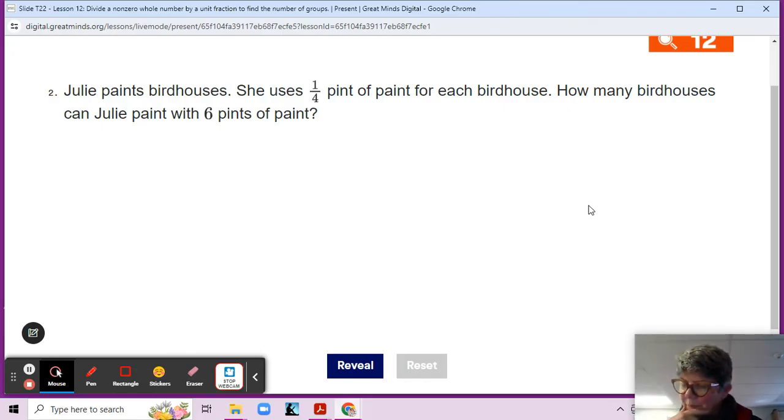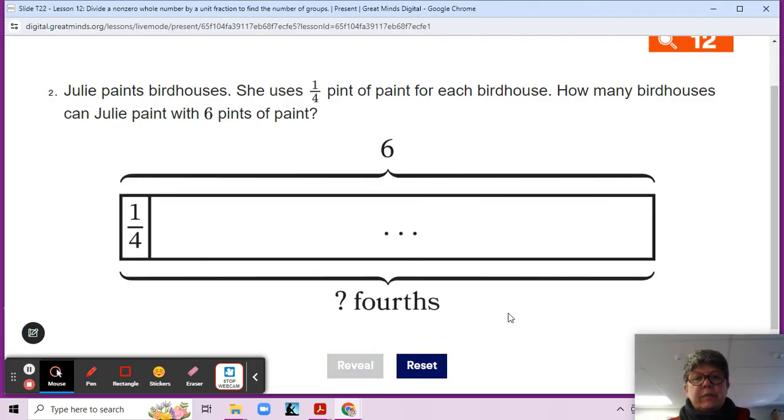Okay. So we should start with a tape diagram, right? Let's see if we have a tape diagram right here. Okay. Awesome. So six pints of paint. Here's our six, right? And she uses one fourth of a pint for each birdhouse. One fourth. How many fourths do we need? How many birdhouses can we paint? Because each birdhouse needs a fourth of a pint.